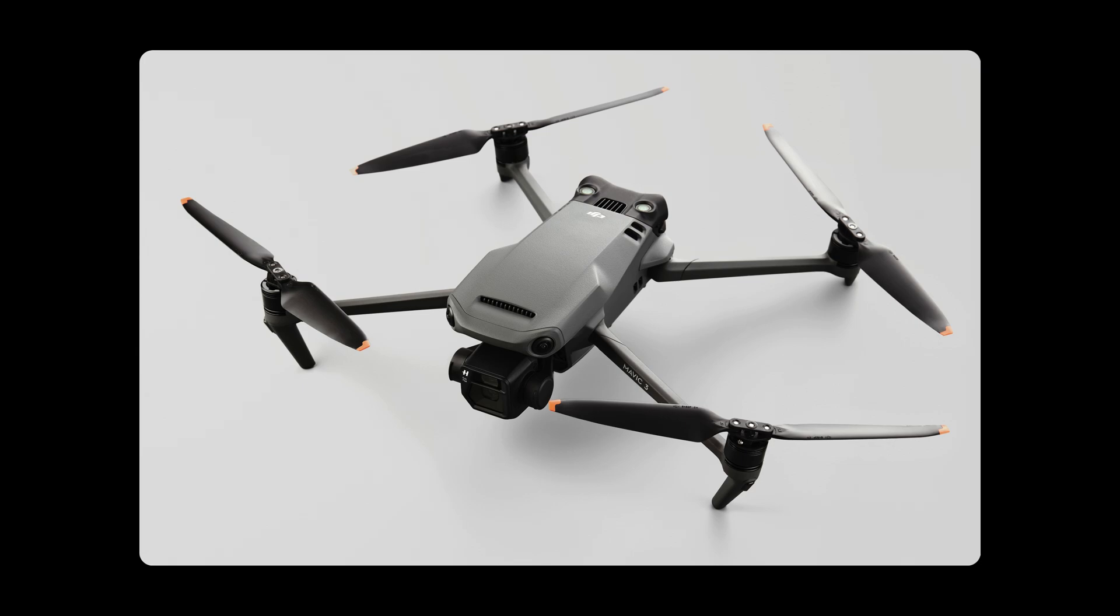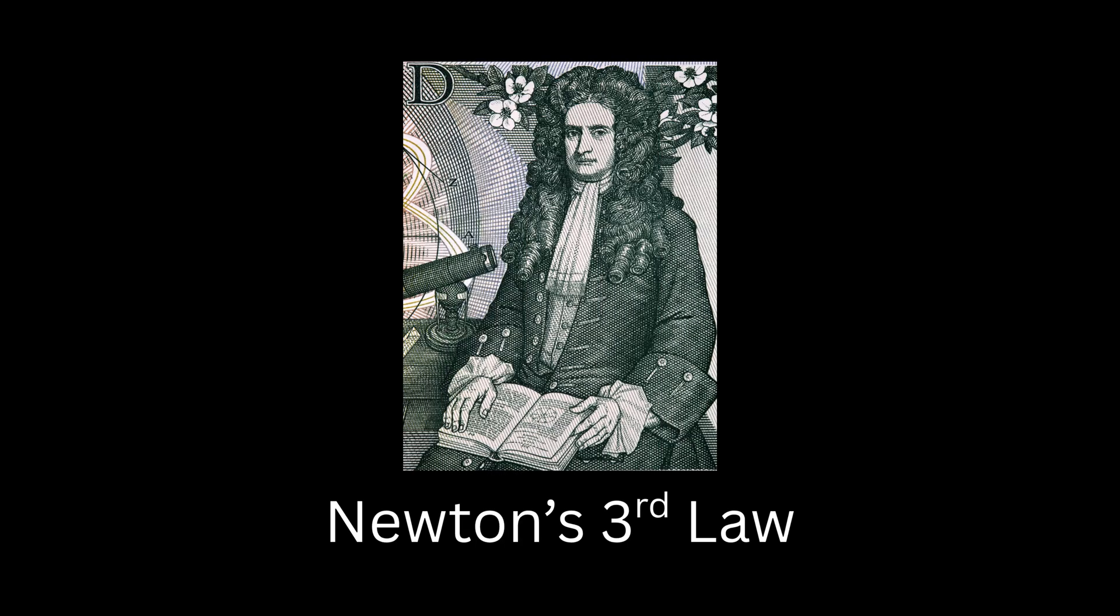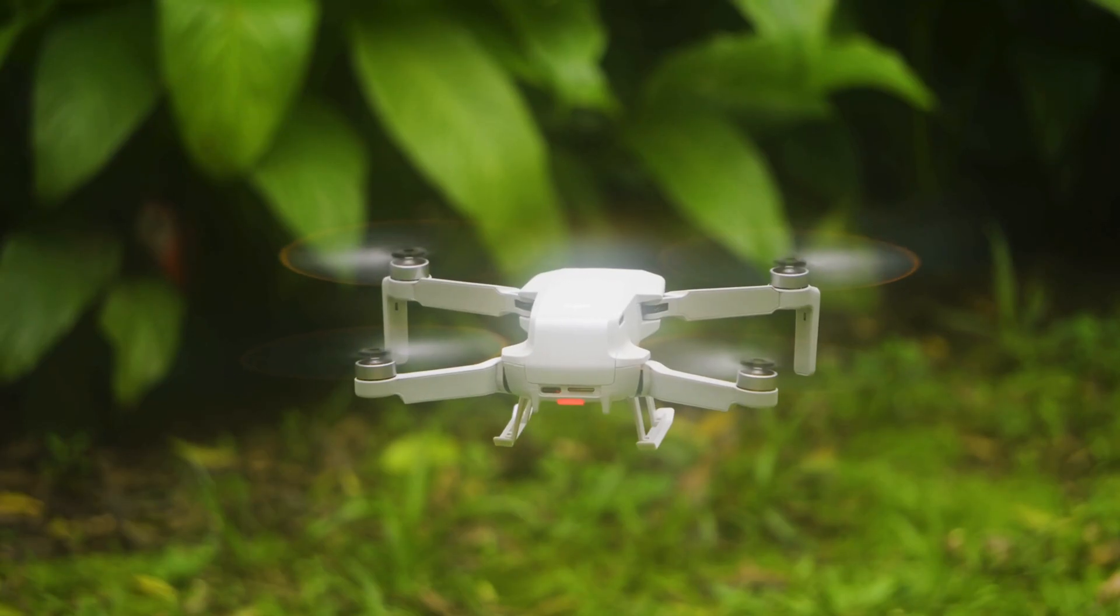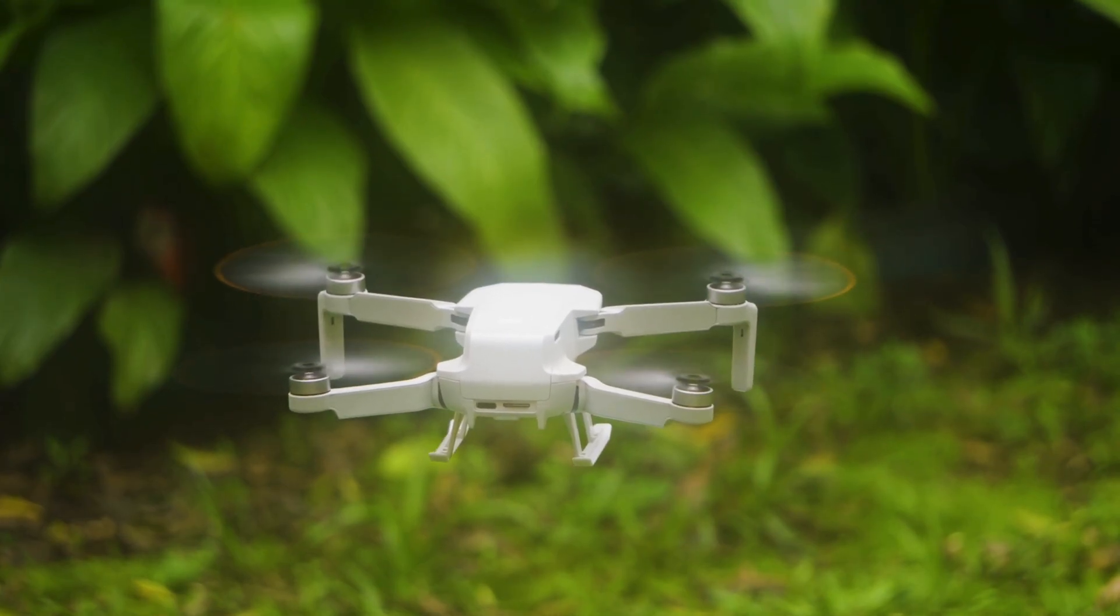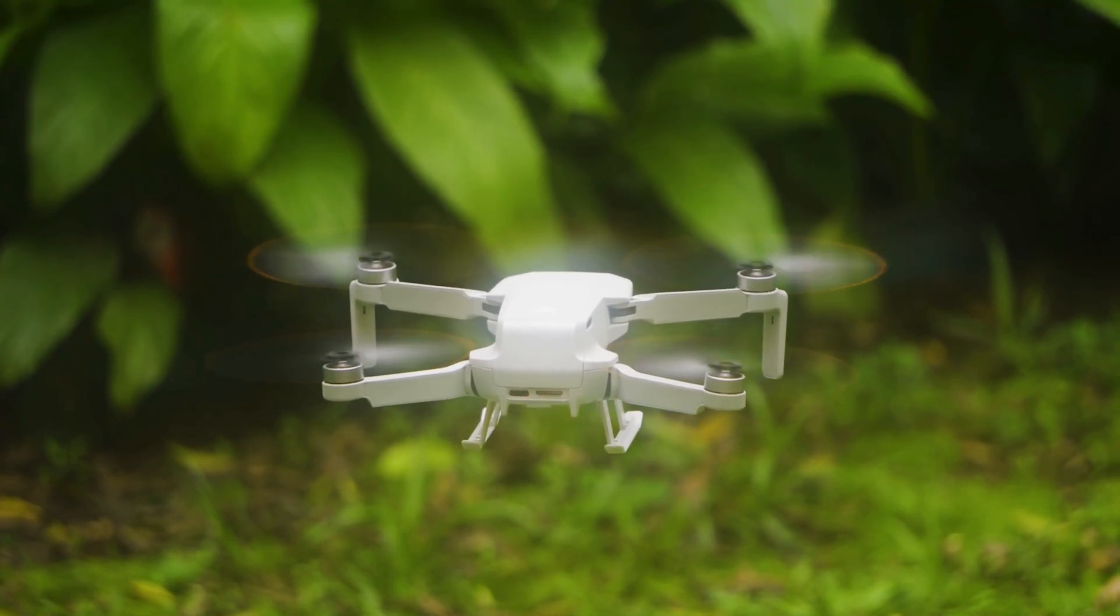A quadcopter is a type of drone that uses four motors, each equipped with a propeller. To lift off the ground, a quadcopter spins all four propellers to generate upward thrust. This is based on Newton's third law of motion, which states that for every action, there is an equal and opposite reaction. In the case of a quadcopter, each propeller pushes air downward, resulting in an upward reactive force that lifts the drone.